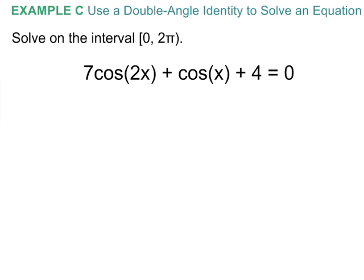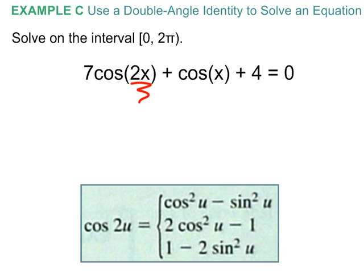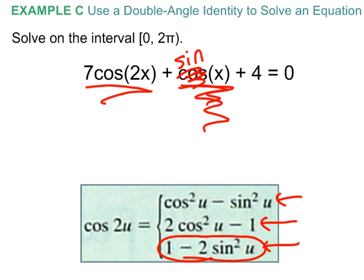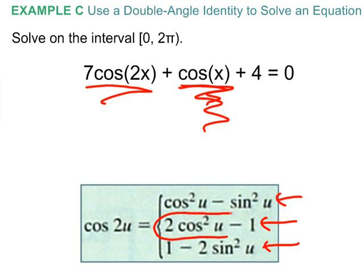Let's do one more. Solve on the interval from zero to two pi. Looking at this one, I see a cosine double angle, and this is where I have a choice, because remember there are three different versions of it. Here's how we decide: I look at what else is in the equation. In addition to cosine of 2x, I've got just a cosine of regular x. So I look at my three options and prefer to choose the one that involves only cosines. If this had been a sine of x instead, I would use the one with only sines. Since cosine of x is the function present in this equation, let's use the version that involves only cosines.